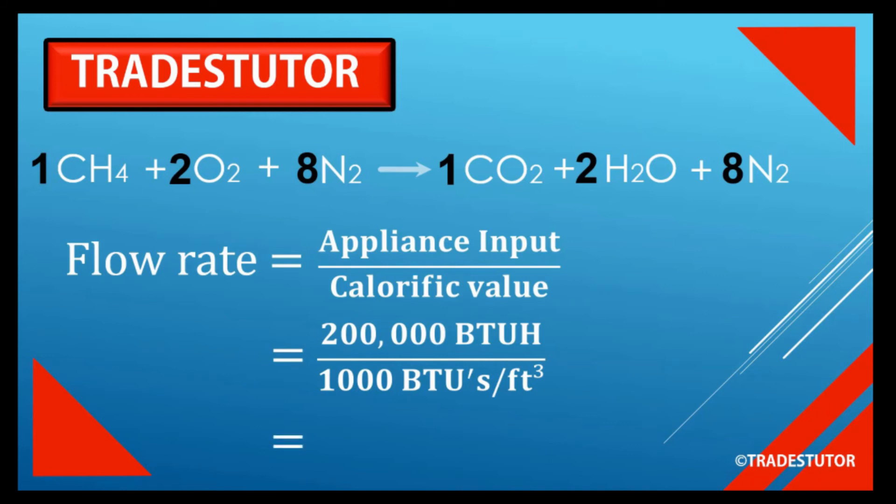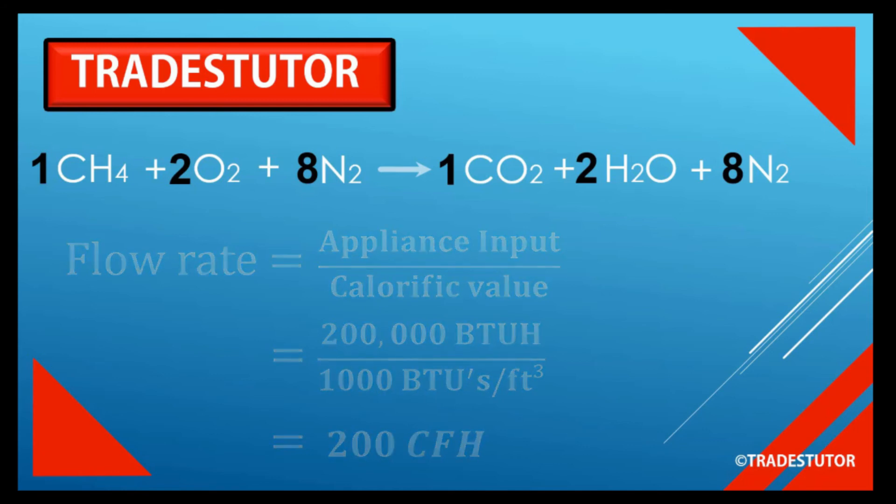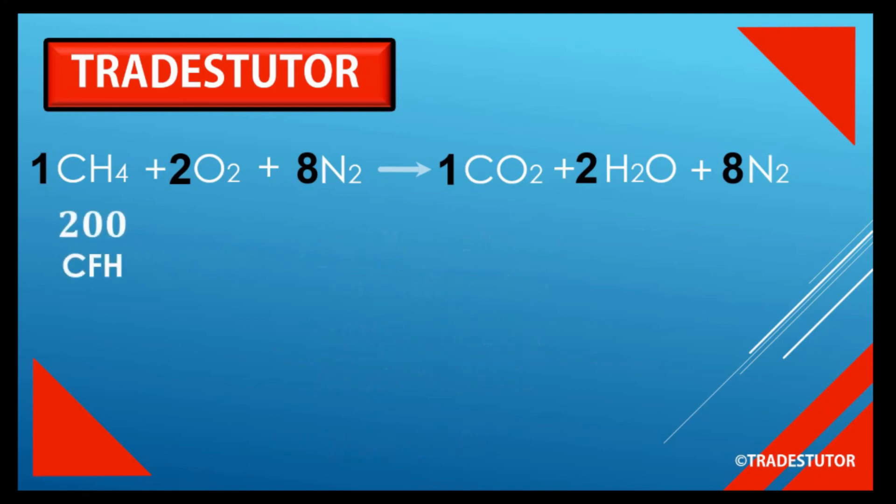What we get is 200 cubic feet per hour. We're going to follow the same ratio when calculating what's coming out the other side. If we have 200 cubic feet of CH4 going in and it's a one-to-one ratio with carbon dioxide, we get 200 cubic feet per hour of CO2. By the same logic, we get twice that for water vapor at 400 cubic feet per hour. For nitrogen, it's 200 times 8, or 1,600 cubic feet per hour. That's it. That's how you figure out the products of combustion.